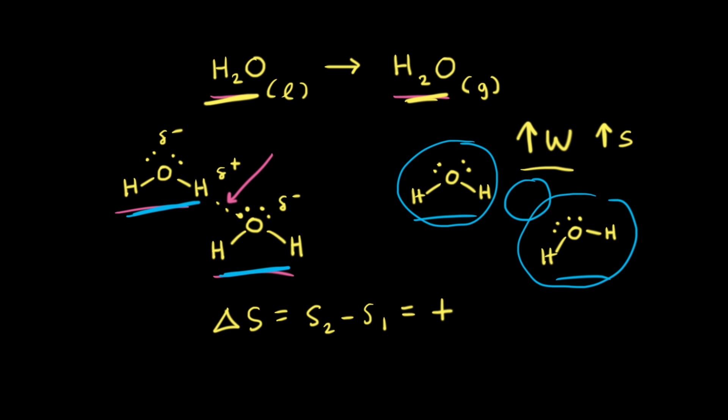This is also one example where thinking about entropy in terms of disorder can be helpful, because gases are more disordered than liquids. Therefore, going from a liquid to a gas increases the amount of disorder, which increases the entropy. But remember, disorder is really just a way to describe an increased number of available microstates.